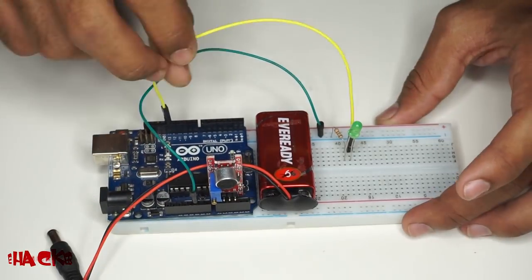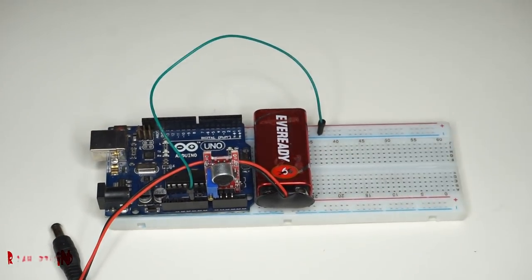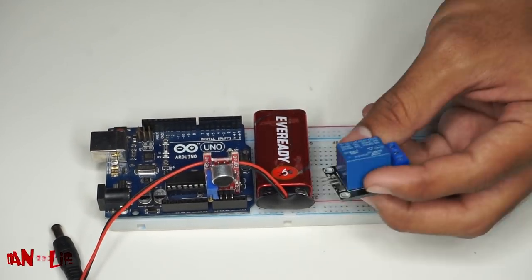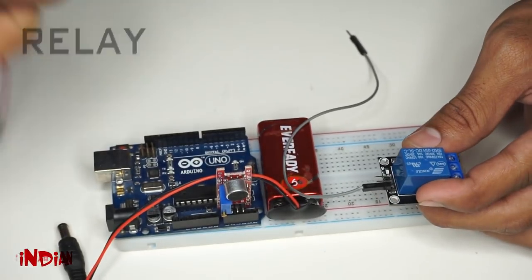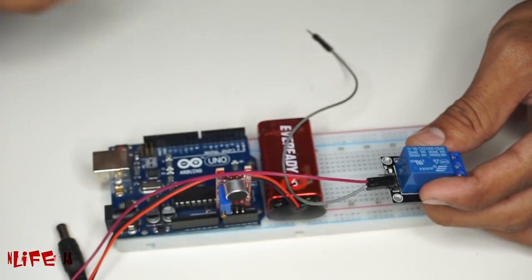It's working fine so now let's try it on a bigger light. For using it in a bigger light, you need to use a relay. Relay is one type of switch, just replace your regular switch with relay.